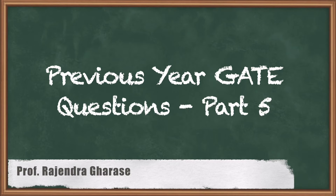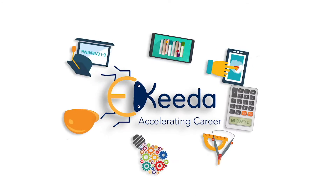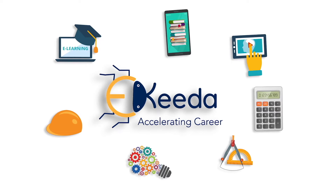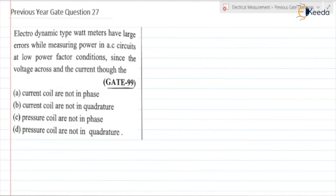Hello friends. In this video, we are going to discuss previous year GATE questions. Previous year GATE question number 27. Let us read the question. An electrodynamic type watt meter has large errors while measuring power in AC circuits at low power factor conditions, since the voltage across and the current through — the four options are: (A) current through the current coil are not in phase, (B) current through the current coil are not in quadrature, (C) current through the pressure coil are not in phase, (D) current through the pressure coil are not in quadrature.